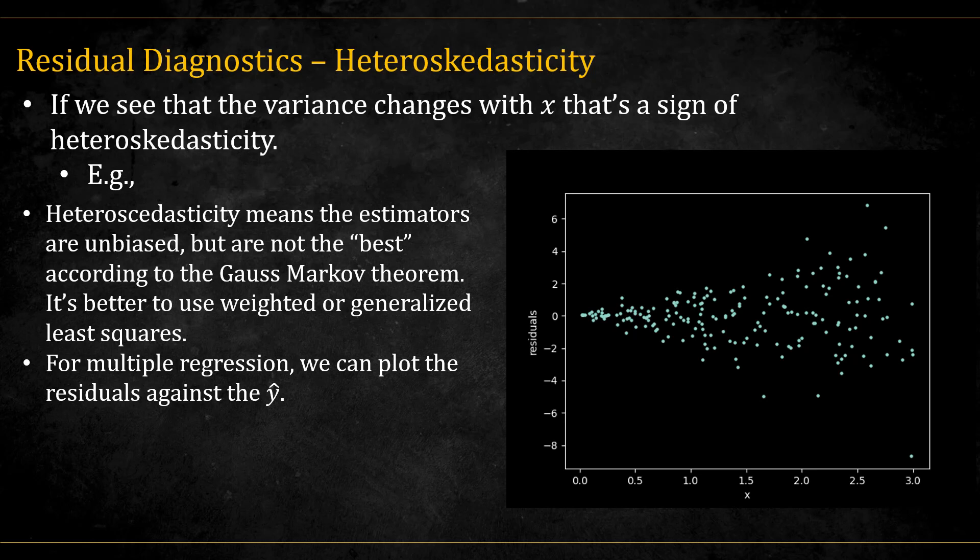We can then remedy this by estimating the variance and running weighted least squares instead of ordinary least squares. This example is actually quite common, as many real-world phenomena are measured on a scale in which the precision depends on the magnitude.